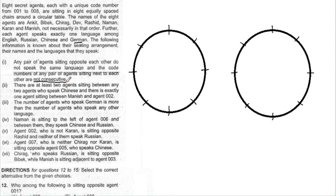The second condition says: there are at least two agents sitting between any two agents who speak Chinese, and there is exactly one agent sitting between Manish and agent 002. This is a specific condition we can use at this point.